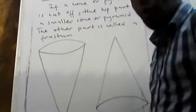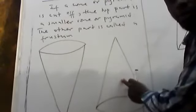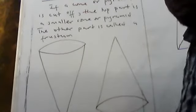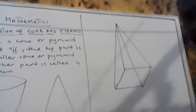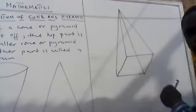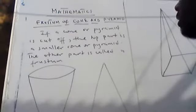If this cone is turned upside down it will look like this. And here is a pyramid on the board — look at the pyramid. This is a pyramid.